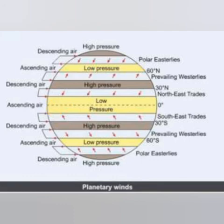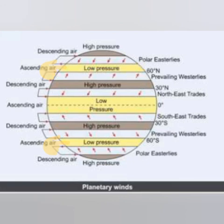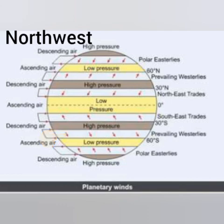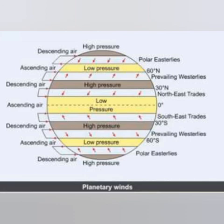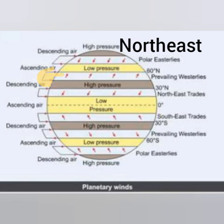In both hemispheres, winds blow from the mid-latitudinal high pressure belt to the subpolar low pressure belt, situated near the 60° parallel. Their original direction changes due to the rotation of the earth. In the southern hemisphere, these winds blow from the northwest to the southeast, and in the northern hemisphere, they blow from the southwest to the northeast. These winds are called the westerlies.